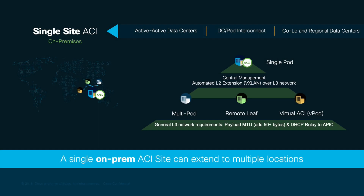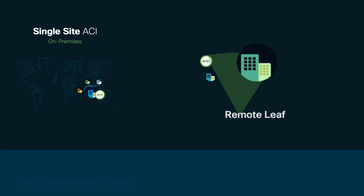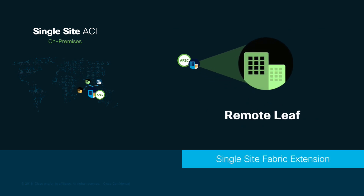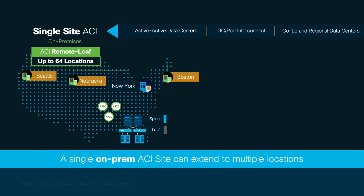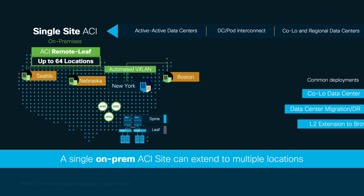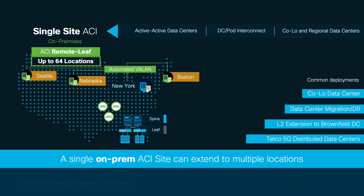Let's now move on to talk about our second option for single-fabric extension, Remote Leaf. With Remote Leaf, we can interconnect up to 64 locations with two leaf nodes each, automating VXLAN across all of them. This is useful when you have a smaller site, such as a co-location environment, branch, or brownfield, and you don't want to invest in a fully-blown ACI fabric with APICs, spines, and leaf nodes. Remote Leaf nodes are assigned to a pod so that they can leverage spine functions whenever they need it. You can have both Multipod and Remote Leaf working together in a single ACI site.